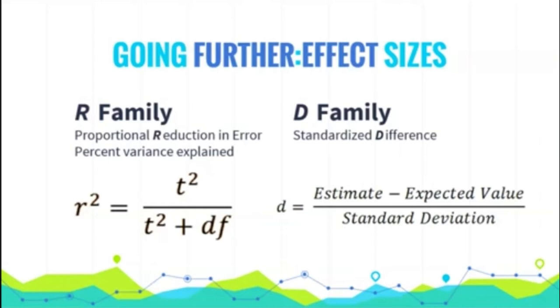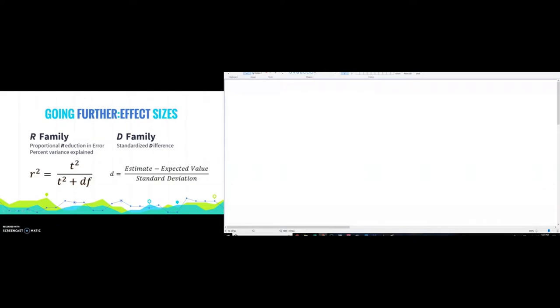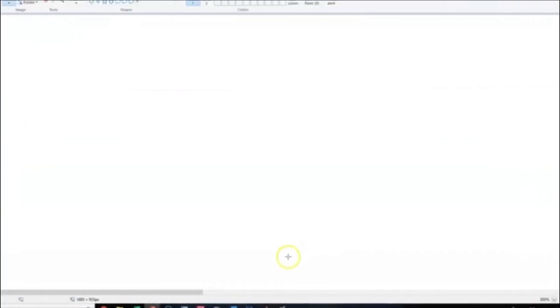R squared equation here: t squared over t squared plus DF. Be sure to solve each of those terms independently before doing the final division. And Cohen's D here is basically the t-test, except for you don't use square root n in the denominator. So the effect sizes that we use here, let's do some examples.